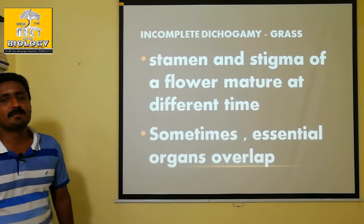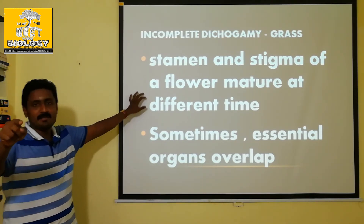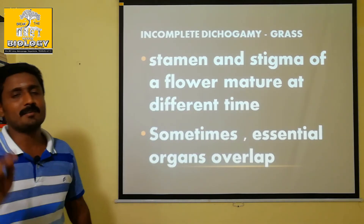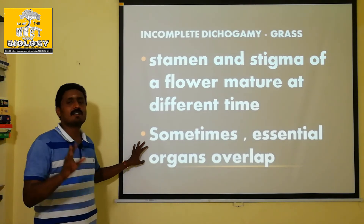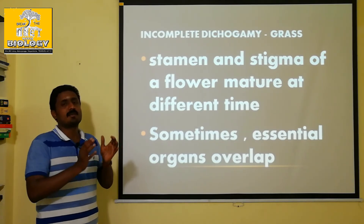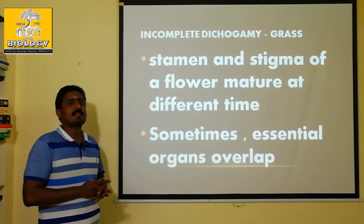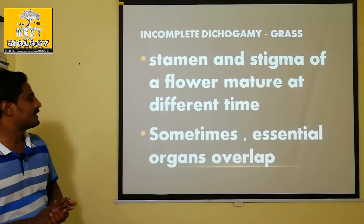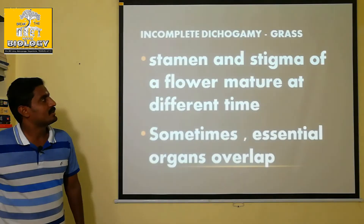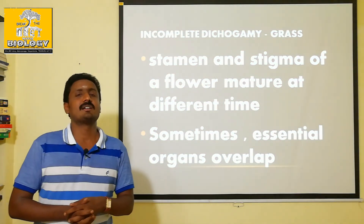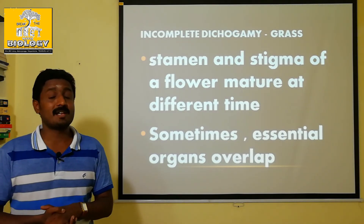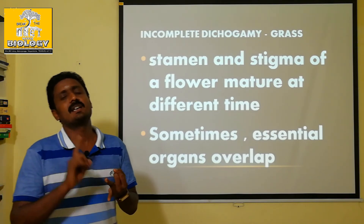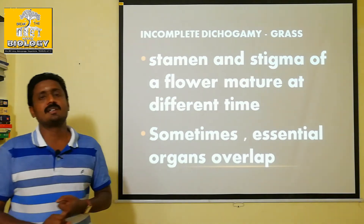Incomplete Dichogamy is seen in grasses. In this type, the stamen and stigma mature at different times — but with some temporal overlap. In Homogamy, anther and stigma mature at the same time; in Incomplete Dichogamy, anther and stigma mature at different times but with partial overlap enabling self-pollination. The three types are: Cleistogamy, Homogamy, and Incomplete Dichogamy.